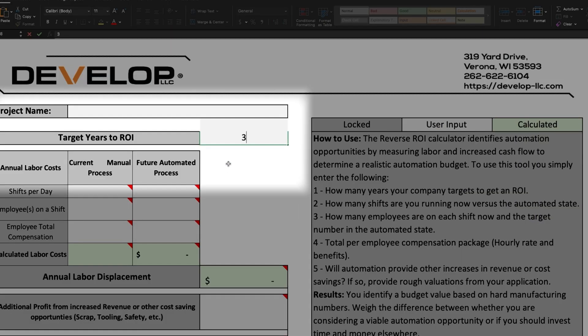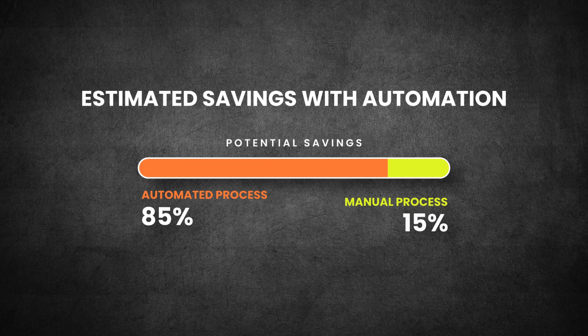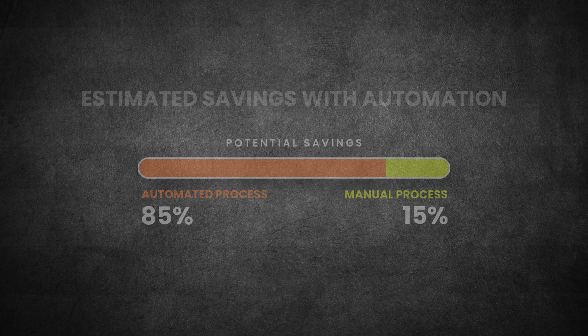For today's activity, I'm going to use three years since that tends to be a common number for high value projects that Develop has helped our customers scope. Next, we get into estimating the potential savings. We're going to compare a typical manual process to the value of an automated process.